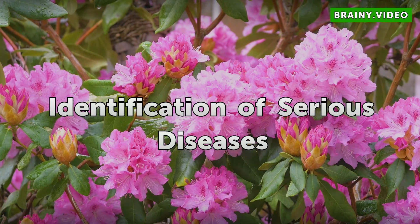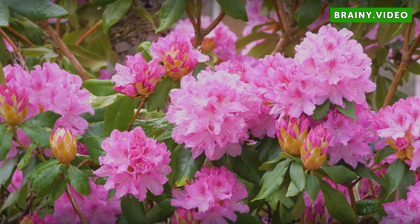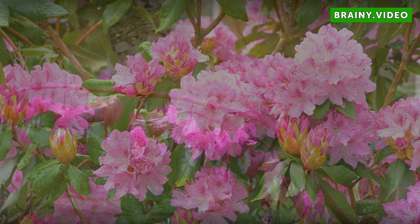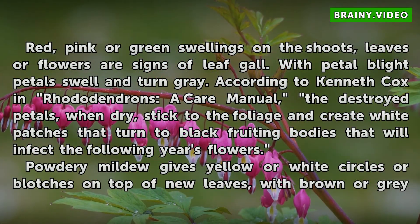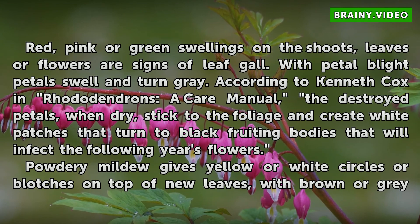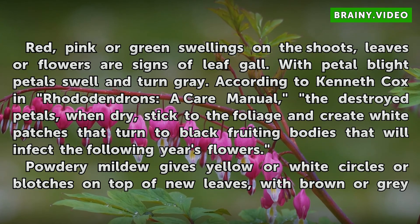Identification of serious diseases. Red, pink or green swellings on the shoots, leaves or flowers are signs of leaf gall. With petal blight, petals swell and turn grey.